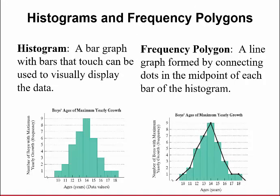Next, I want to talk about some visual representation of this. So we have what's called a histogram. A histogram is a bar graph with bars that touch that can be used to visually display data. So if you look here, here are the boys' age of their maximum yearly growth and their counts. When they had one boy who had the maximum growth at age 10, there were nine at age 14. You can see the distribution of that data.